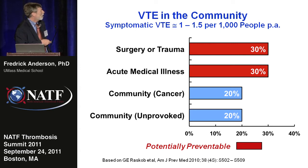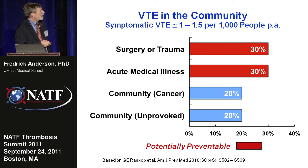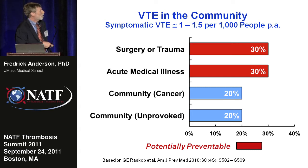There are 40% of patients that remain — about 20% with cancer in the community setting, out of the hospital, long-term survivors or undergoing treatment for cancer, and then another broad group of idiopathic, community-unprovoked cases. We have to recognize that the potentially preventable venous thromboembolism right now — our confidence is around 60%. We have a lot to learn about how to deal with this other 40%.